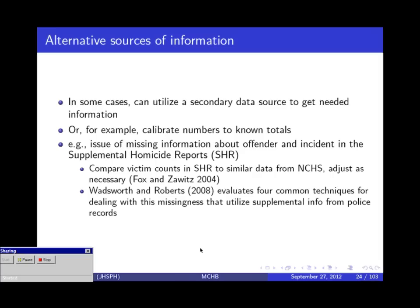Sometimes you actually can get missing data from other sources. For example, in criminology there are different national data sets that can be used to get county crime rates. Sometimes if you think broadly, you can actually bring in other data sources to help fill in the missing values.